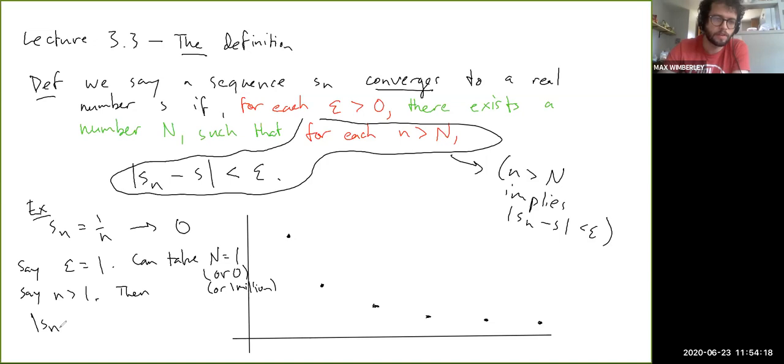Say little n is bigger than capital N, which we pick to be one in this case. Then absolute value of s_n minus zero is just one over n, and that's clearly—well okay, actually I wasn't super careful. This says a strict inequality. You could actually probably replace this with a weak inequality and it's not too bad. Let's take this to be two, sorry. That was a little bit clumsy.